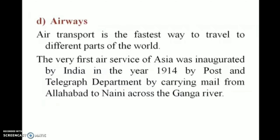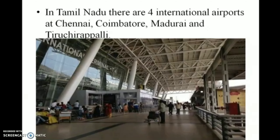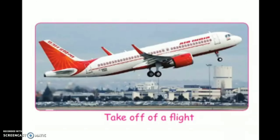Air transport is the fastest way to travel to different parts of the world. The first air service in Asia was inaugurated by India in the year 1914 by the post and telegraph department, carrying mail from Allahabad across the Ganga river. In Tamil Nadu, there are four international airports at Chennai, Coimbatore, Madurai and Tiruchirappalli.